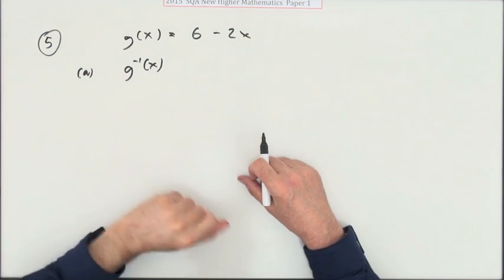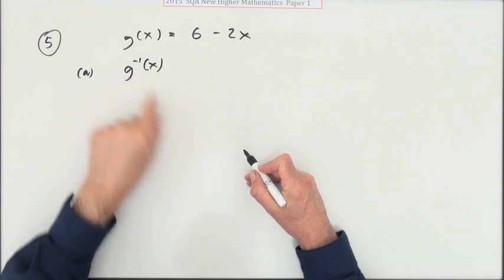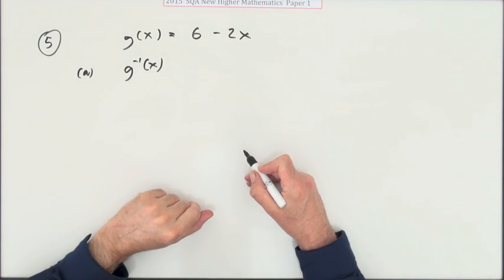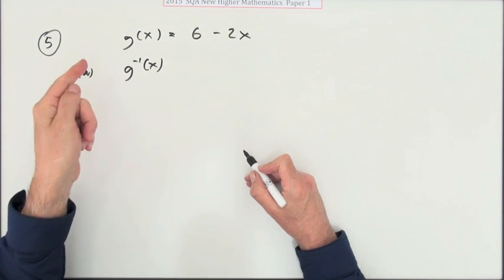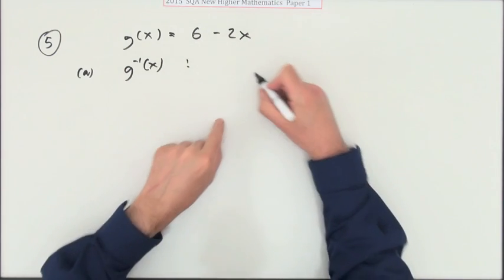Number five gives you this function g(x) = 6 - 2x and asks for the inverse function. That means if you feed it the answer, it will give you the original number. Well, calling the answer y...